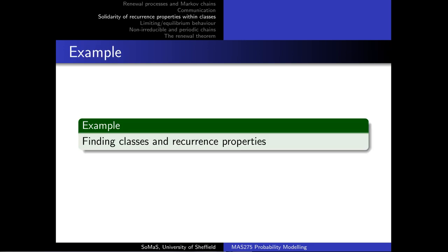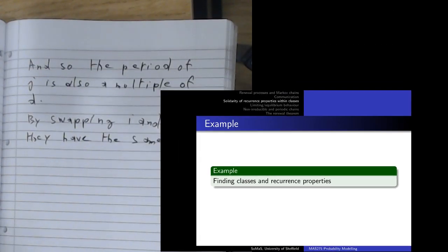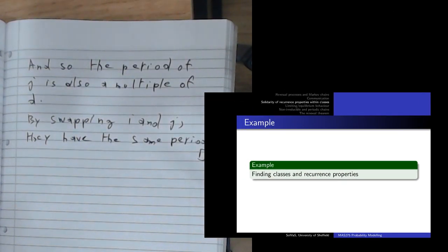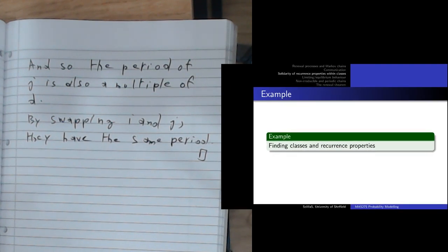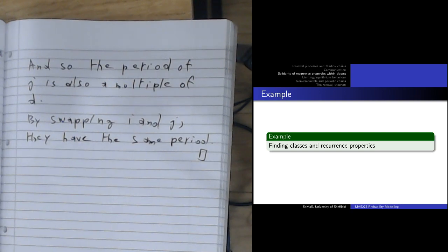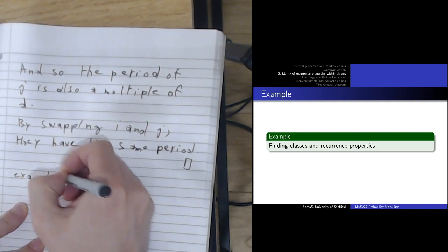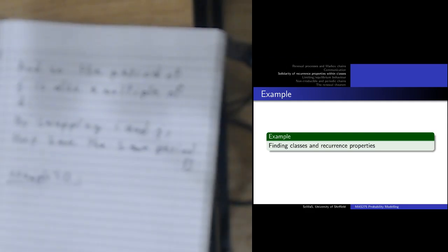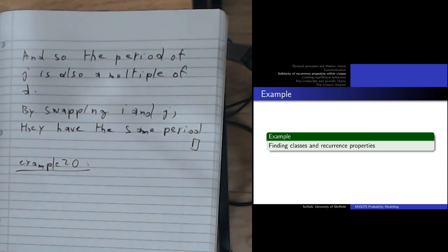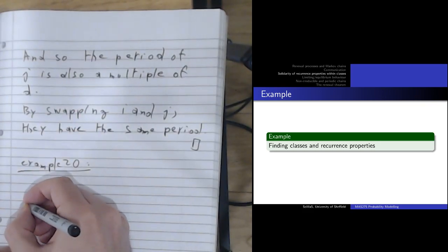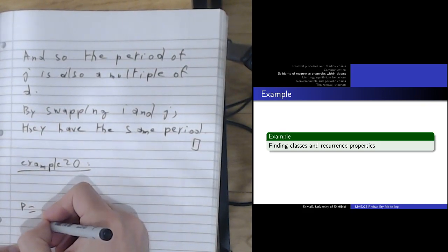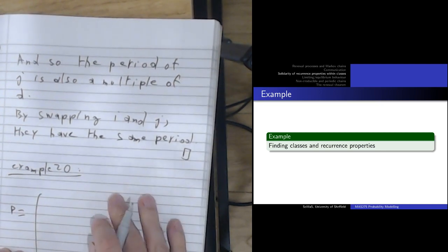Let's come to the example, because the best way to get familiar with these concepts is to play around with them. I'm going to give you a matrix — Example 20 — and we're going to look at the Markov chain defined by this 7×7 transition matrix. One thing to get used to is just looking at big matrices and seeing what kind of Markov chain we have.